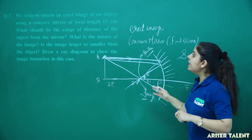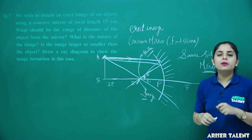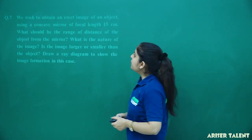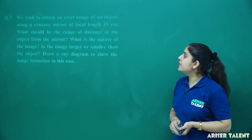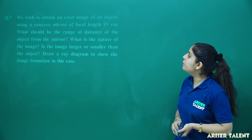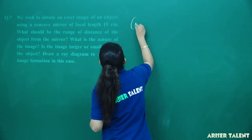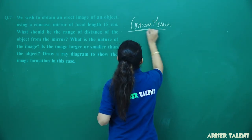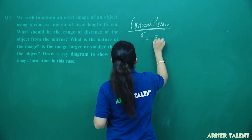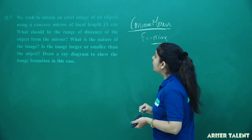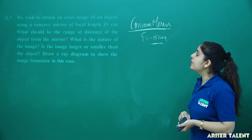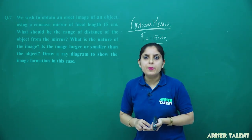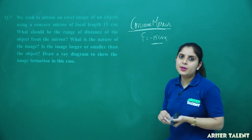So just copy this part. The next question again asks: we wish to obtain an erect image of an object using a concave mirror of focal length 15 cm. What should be the range of distance of the object from the mirror? What is the nature of the image — is it smaller or bigger than the object? You also need to draw a ray diagram for the image formation.